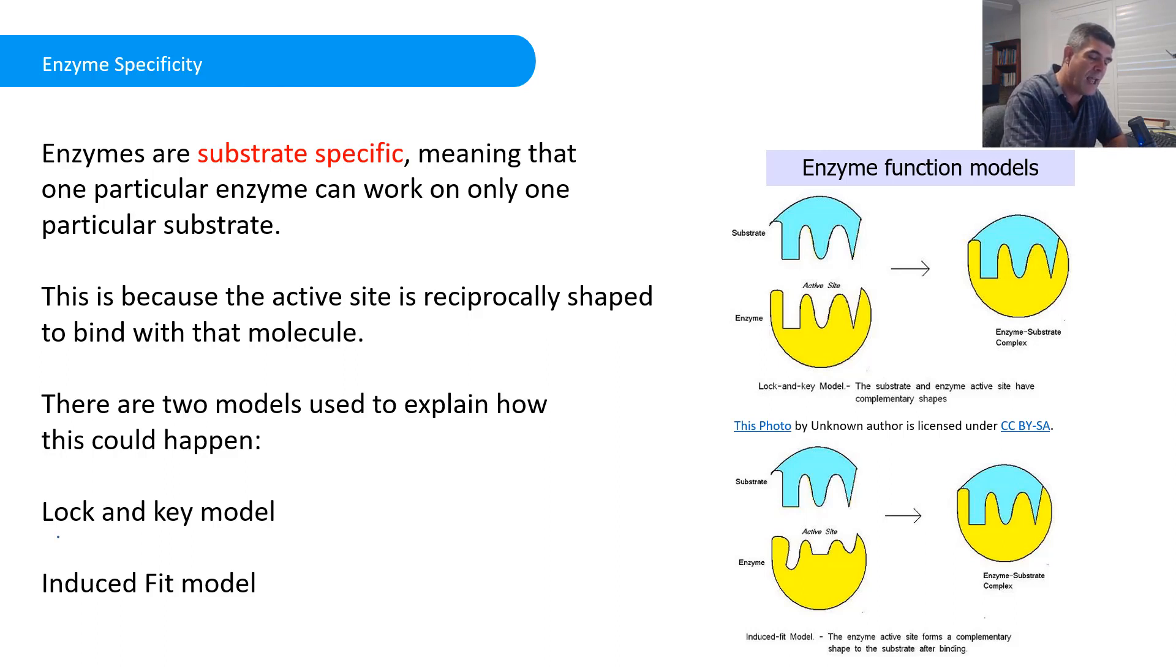The first is called the lock and key model. As you would expect, this is about having a substrate which perfectly matches the spaces in the enzyme. It fits together like a key and a lock. You can't just put any key in the lock. You have to have the right one or it won't function. The lock and key is very much about the substrate and the enzyme coming together at the active site with a perfect fit.